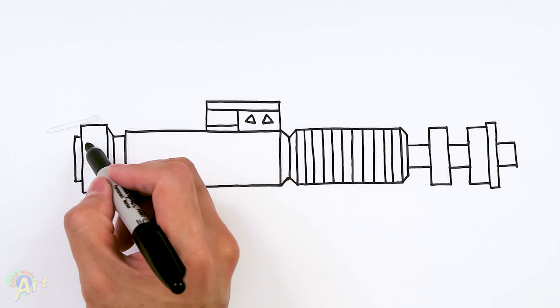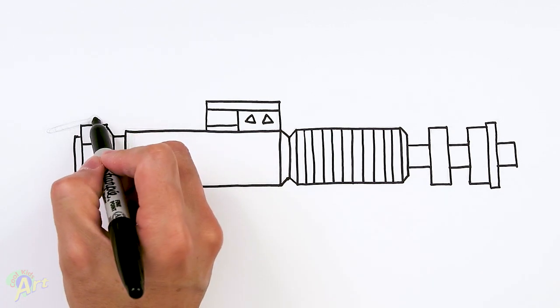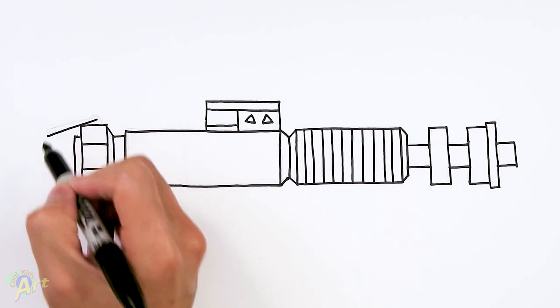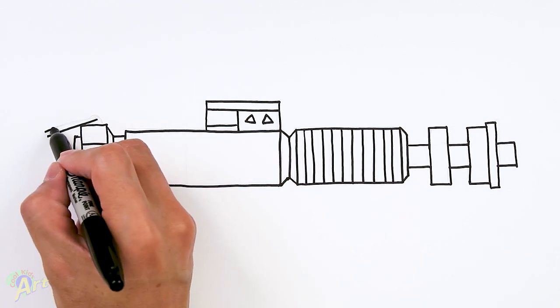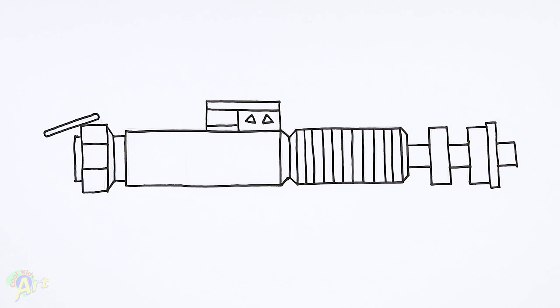And then for the details here, I'm just gonna draw in two lines. And then on the end here, it's got a little hook. So I'm just gonna draw one line. Drawing the same line on top. And then close off, round off the end.